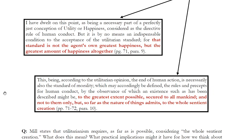Let's look at a second passage where Mill states: to the greatest extent possible, we should secure to all mankind, and not to them only, but so far as the nature of things admits, to the whole sentient creation. So should we be concerned with all human beings when we act? Yes, we should. But we should also be concerned with any being that can feel pleasure and pain — any sentient creature, as Mill says here.